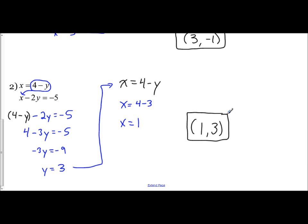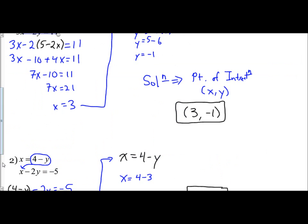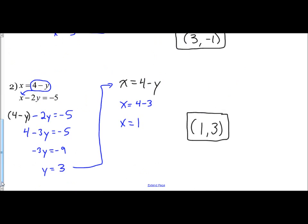And that is the substitution method. There's a clear pattern: you solve for one of the variables — in both examples here, one variable was already solved for. When you substitute it into the other expression, put it inside parentheses. Most of the time you'll distribute, combine like terms, and solve a multi-step equation. Once you get that, you know one of the two variables — plug it in and find the other. Remember, the solution represents a point of intersection, so write your answer as a coordinate.